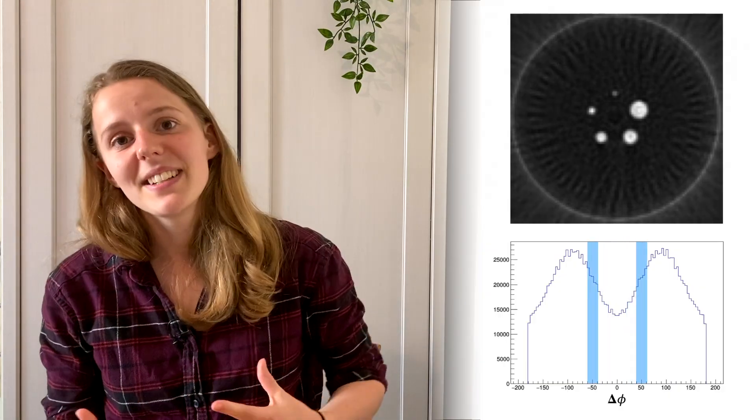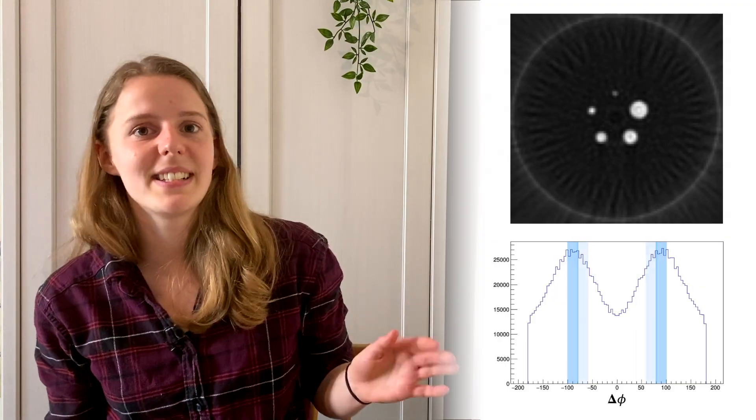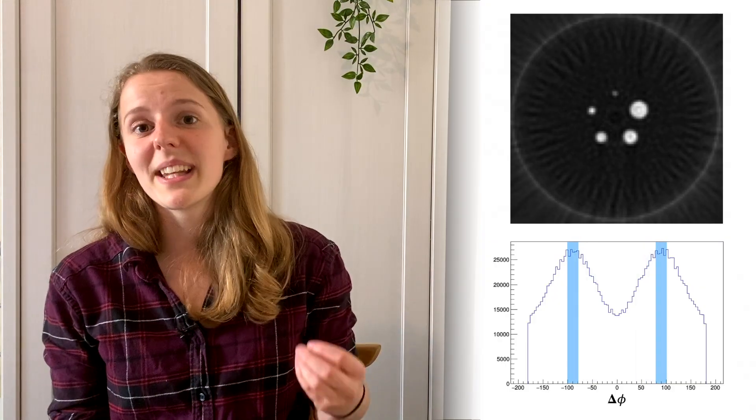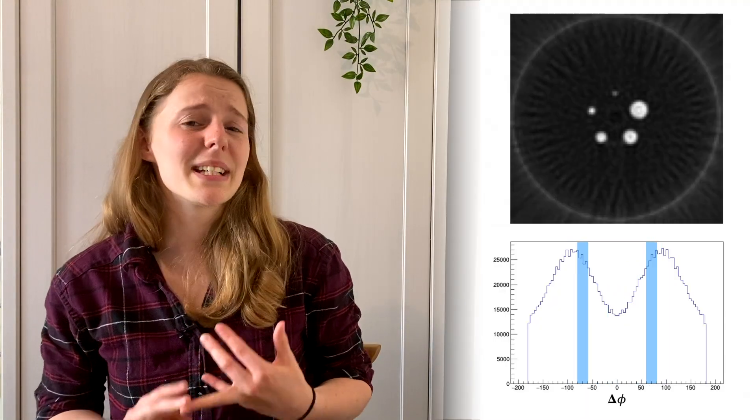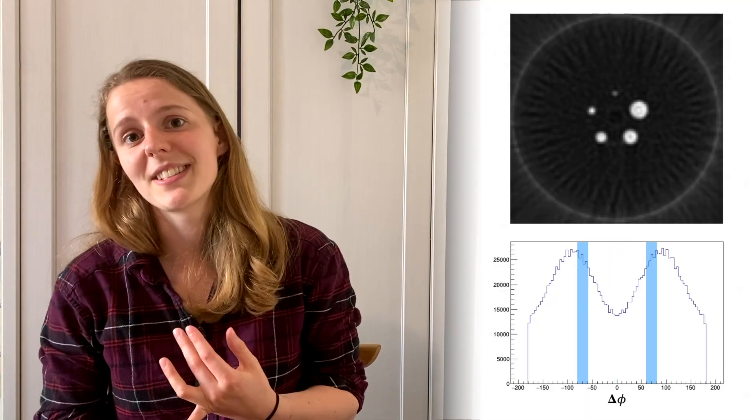We can do this again for different delta phi sections, all the way up to 90 degrees. These are the events we think are most likely to still be entangled. And indeed, the image gets much clearer with better contrast and less noise.